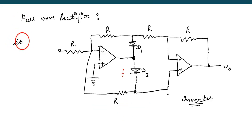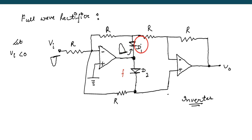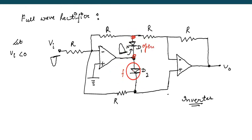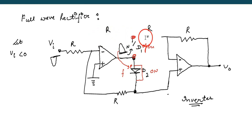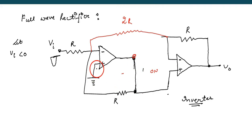When the negative half appears at the input, the first op-amp is an inverting amplifier, so it comes positive at the output. With this positive, D1 becomes OFF — this is an open circuit. This positive appears at the P-side of D2, so D2 becomes ON and acts like a short circuit. Now the circuit modifies: R and R are in series, so total resistance becomes 2R. Since diode D2 is ON, this portion is a short circuit.